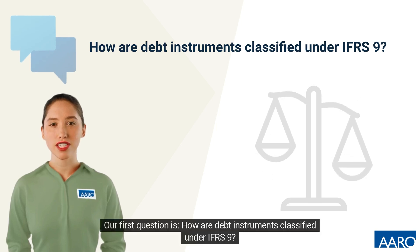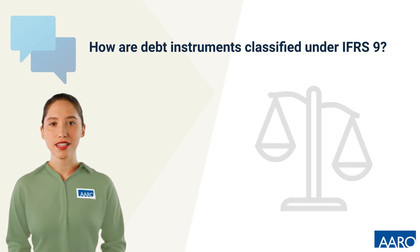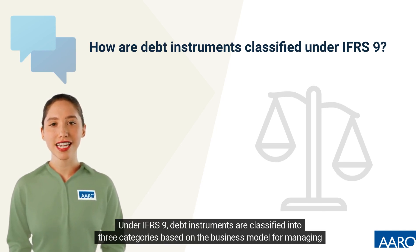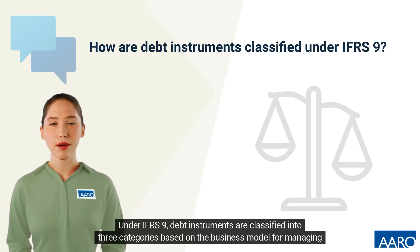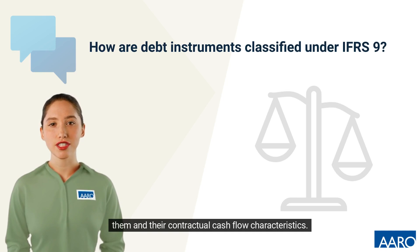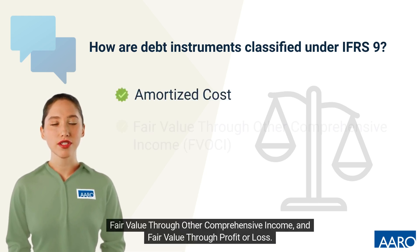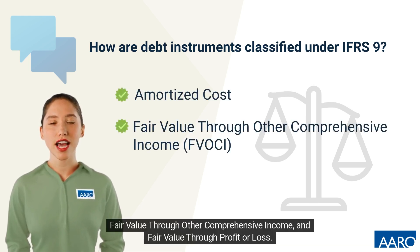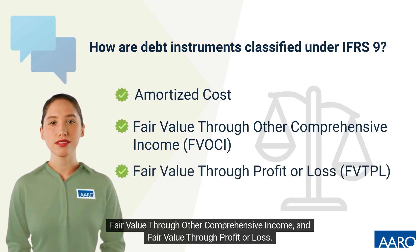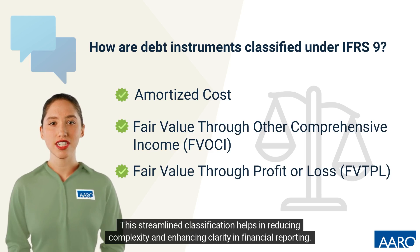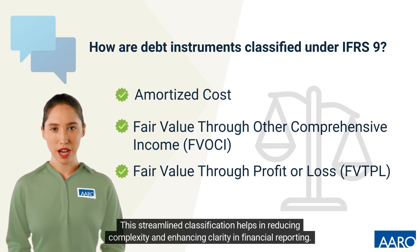Our first question is: how are debt instruments classified under IFRS 9? Under IFRS 9, debt instruments are classified into three categories based on the business model for managing them and their contractual cash flow characteristics. These categories are amortized cost, fair value through other comprehensive income, and fair value through profit or loss. This streamlined classification helps in reducing complexity and enhancing clarity in financial reporting.